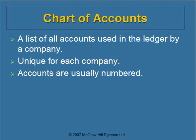To begin, we're going to talk about the chart of accounts. A chart of accounts is a list of all the accounts a company uses in its accounting system. The accounts are listed in numerical order. The first number in the numbering system is an industry standard. Assets always start with one. Liabilities start with two. Equity accounts, like capital and withdrawals, start with three. Revenues start with four. And expenses start with five or six.